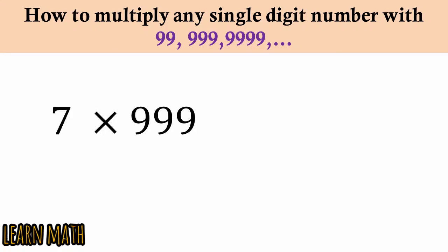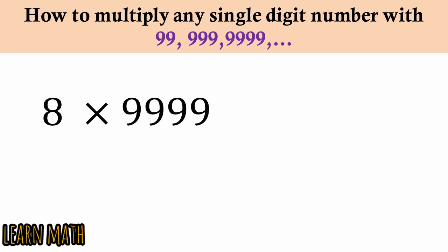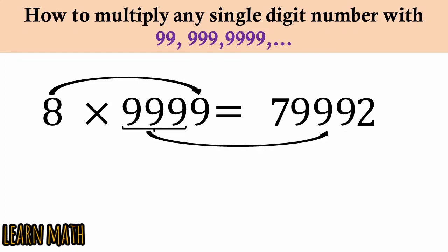The next example is 7 multiplied by 99: 7 into 9 is 63, and put the double 9 here — so 693 is the answer. The third example is 8 multiplied by 999: 8 into 9 is 72, and you put the three 9s here — so 7992 is the answer.